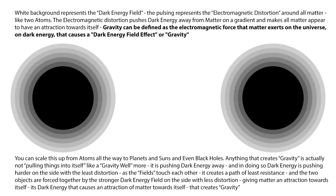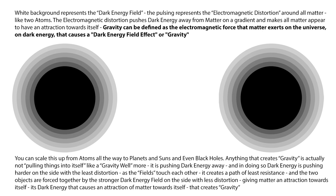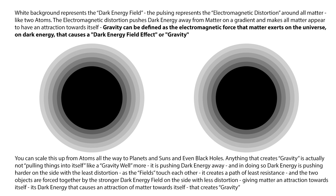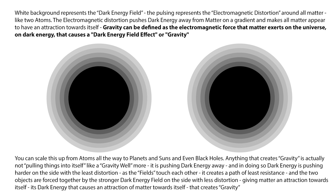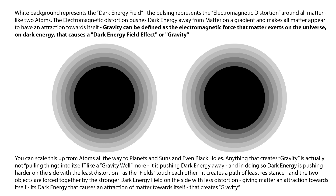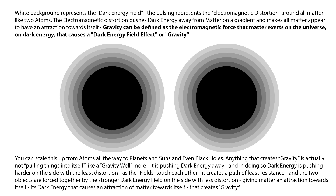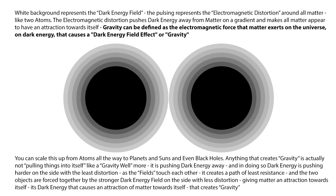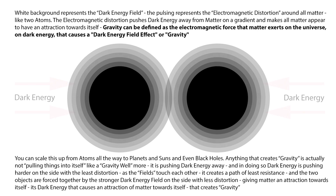The white background represents the dark energy field. The pulsing represents the electromagnetic distortion around all matter, like two atoms. The electromagnetic distortion pushes dark energy away from matter on a gradient and makes all matter appear to have an attraction towards itself. Gravity can be defined as the electromagnetic force that matter exerts on the universe on dark energy that causes a dark energy field effect, or gravity.